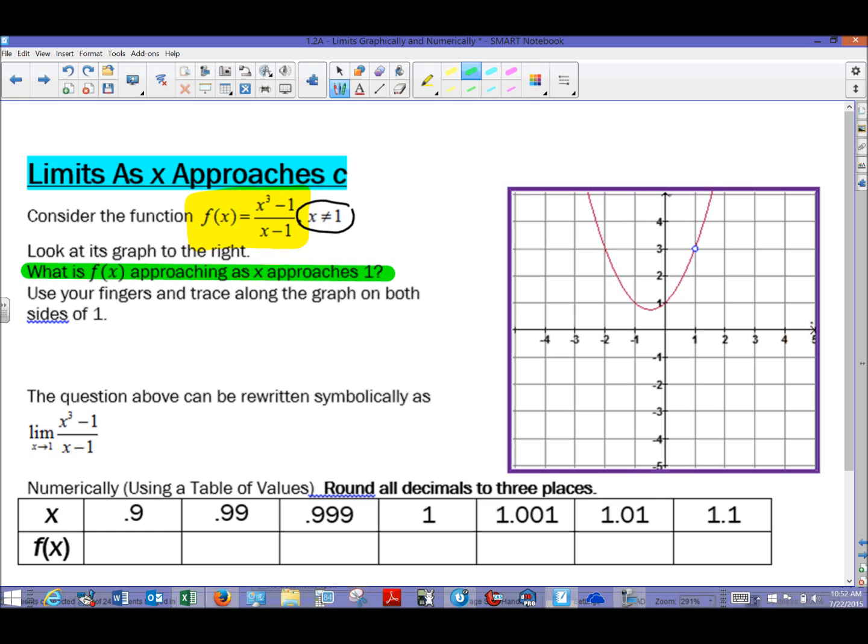It's a very wordy question. But it's one that's definitely worth investigating. So it says, let's use our fingers and trace along the graph on both sides of one. And maybe we could figure out what this is doing. Well, let's say that our left finger along the graph starts somewhere over in this region. Now notice I'm letting x get closer and closer to one.